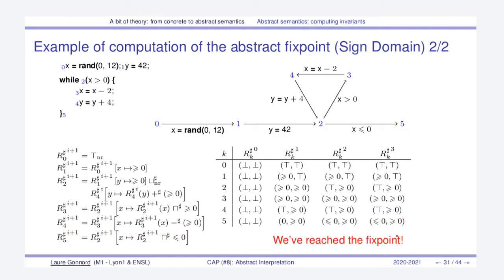At the end of iteration 3, the two abstract values at those control points are equal, which means we have reached a fixed point. The theory says that if we reach a fixed point, the abstract values we get are safe approximations of the invariants we are searching for. For instance, at control point 4 we know for sure that y is always positive.